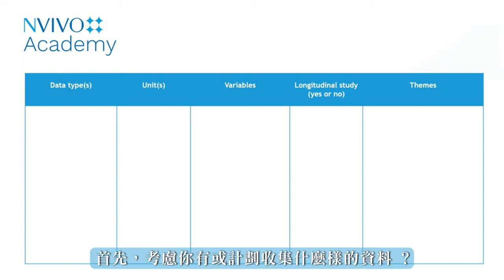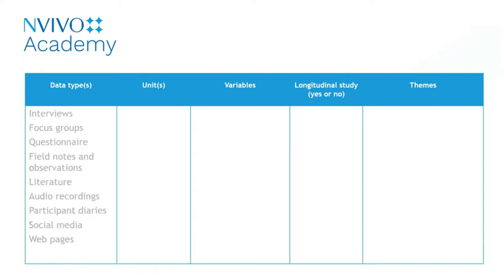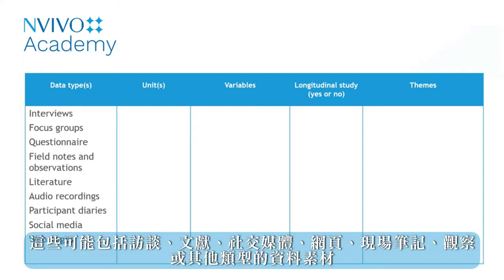First, think about what kinds of data you have or plan to collect. These may include interviews, literature, social media, web pages, field notes, observations, or other types of data.